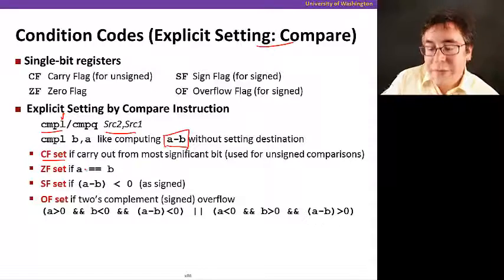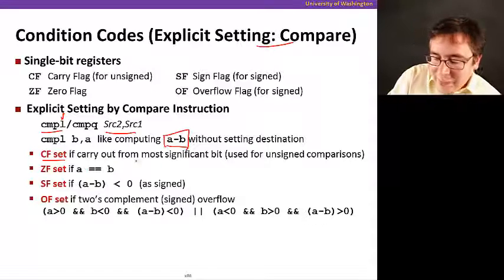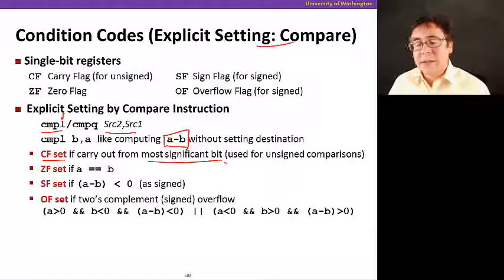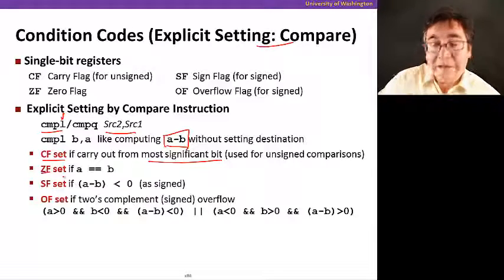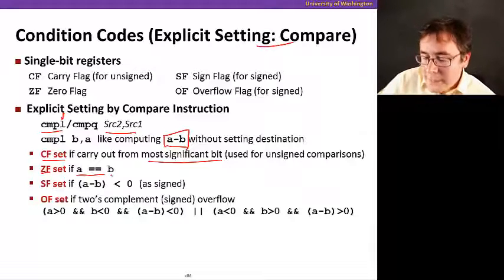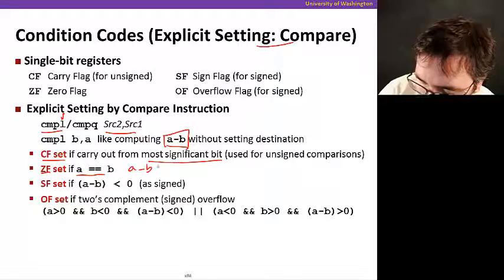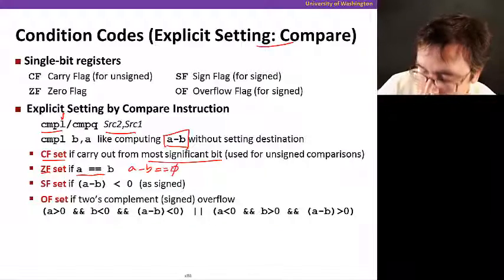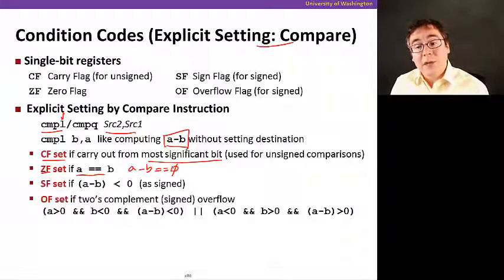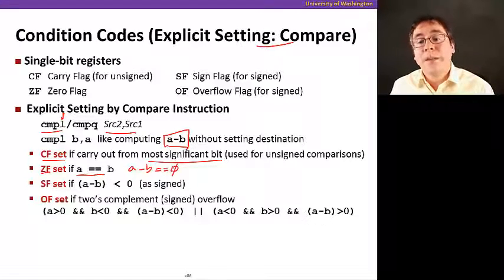Here, the CF is going to be set if the carry out from the most significant bit is set. So it's used for unsigned comparisons. The ZF is set, the zero flag is set, if a equals b. Why is that? Because if a minus b equals zero, it means that a equals b. So this set is going to be set. This is useful for an equality comparison.